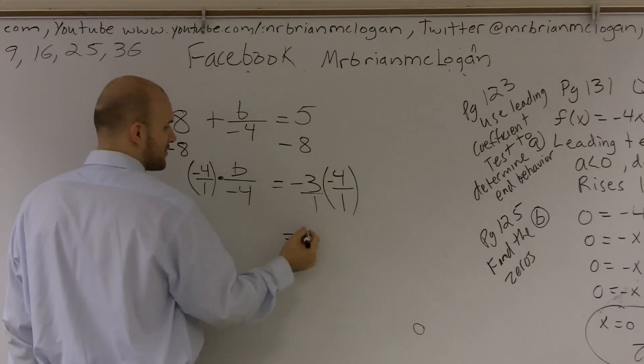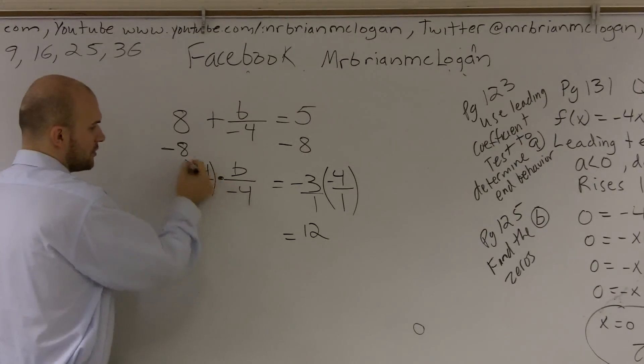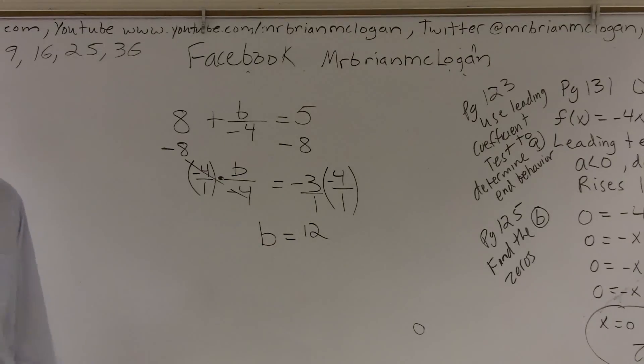Or sorry, negative 3 times negative 4 becomes a positive 12. I don't need to write over 1. And those are what we're going to say are going to cancel out to be 1. So b equals 12. And that's how you solve that problem.